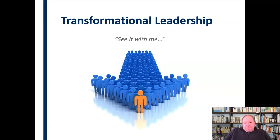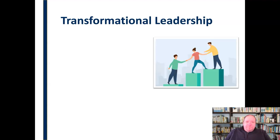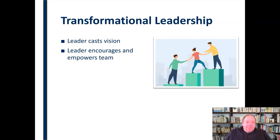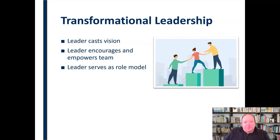Finally, there is transformational leadership, where the leader essentially says, try and see this with me — envision this with me. They set that vision and ask people to come along. In transformational leadership, the leader casts a vision, identifies the mission, sets that goal, and then encourages and empowers the team to help them achieve that mission and vision. The leader also serves as a role model — not only setting the vision but setting the standard for how to achieve it, demonstrating the behaviors needed, modeling them for employees. They're not just talking the talk; they're walking the walk as well.